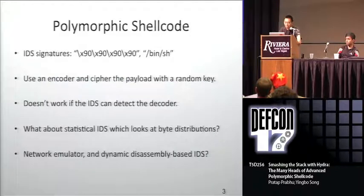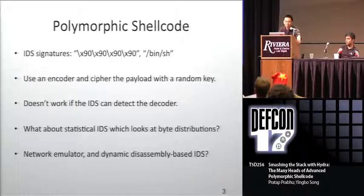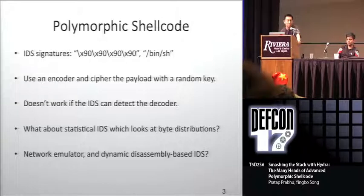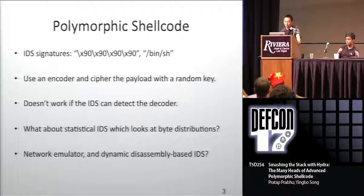Why do we need polymorphic shellcode? IDS signatures for shellcode are easy to write. For example, you can detect a string of hex 0x90s — that's your basic no-op sled. You can look for '/bin/sh', indicating an attempt to open a shell. Many polymorphic engines use an encoder to cipher the payload with a random key, but that doesn't work if your decoder is always the same. An IDS can detect the decoder, so the decoder has to be polymorphic — it has to change every time.